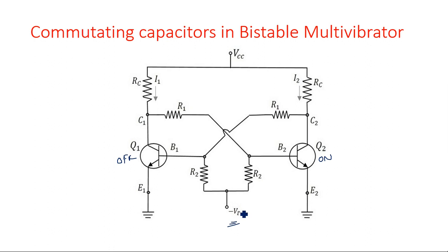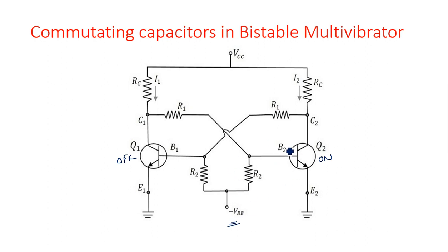In a self-biased configuration, the two emitters are connected together and connected through a resistor to ground — there is no VBB. For the fixed bias network we are considering here, assume this transistor is in the on state and Q1 is in the off state.